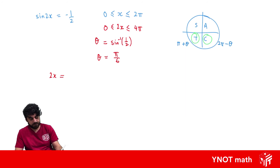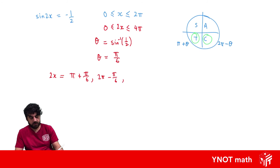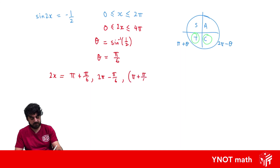The first-revolution values of 2x are: π plus our base angle (π/6) in the third quadrant, and 2π minus our base angle (π/6) in the fourth quadrant. Because our domain has changed and we need to look at two revolutions, we also add 2π to each of those answers to get the second-revolution values.